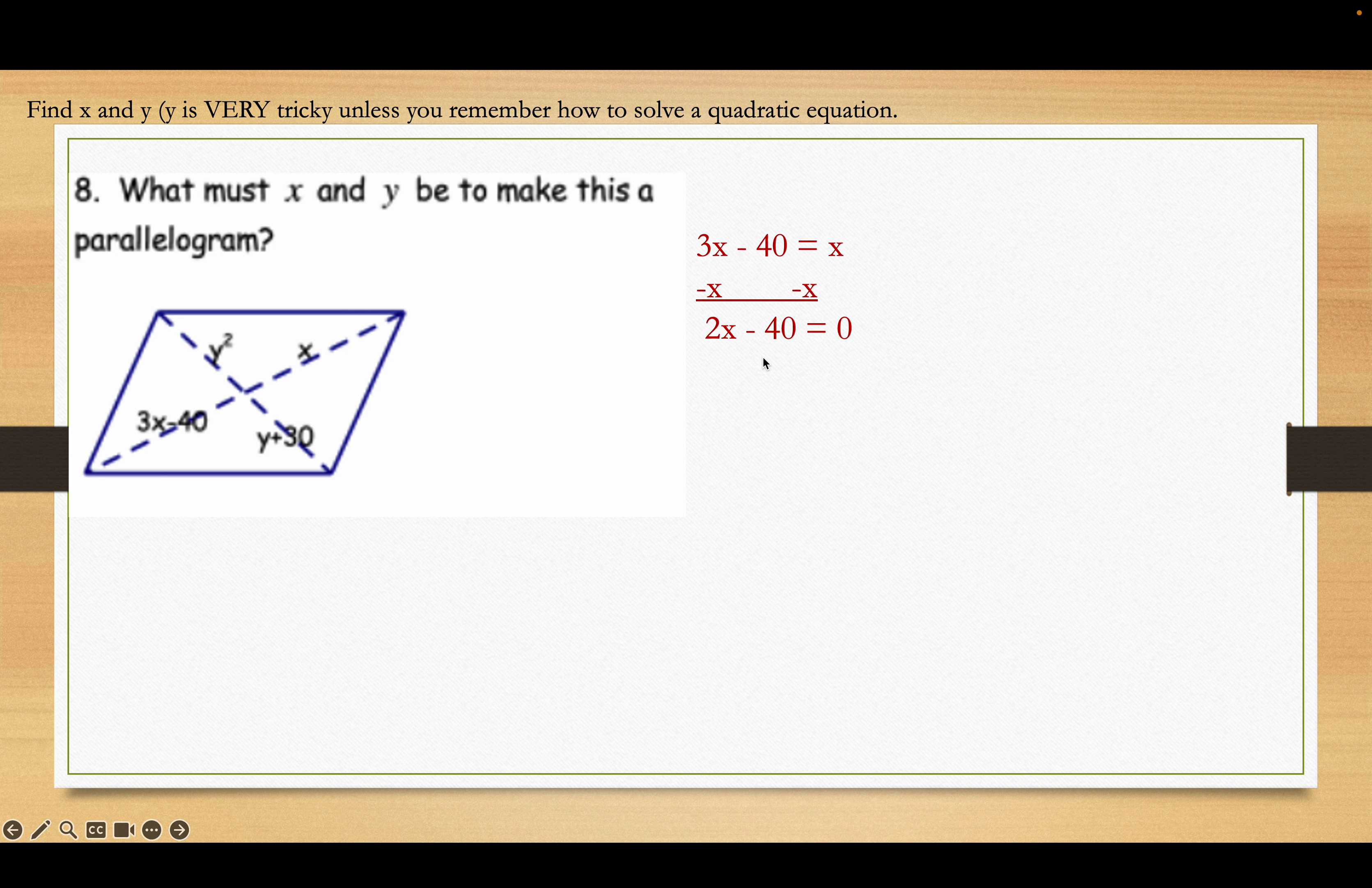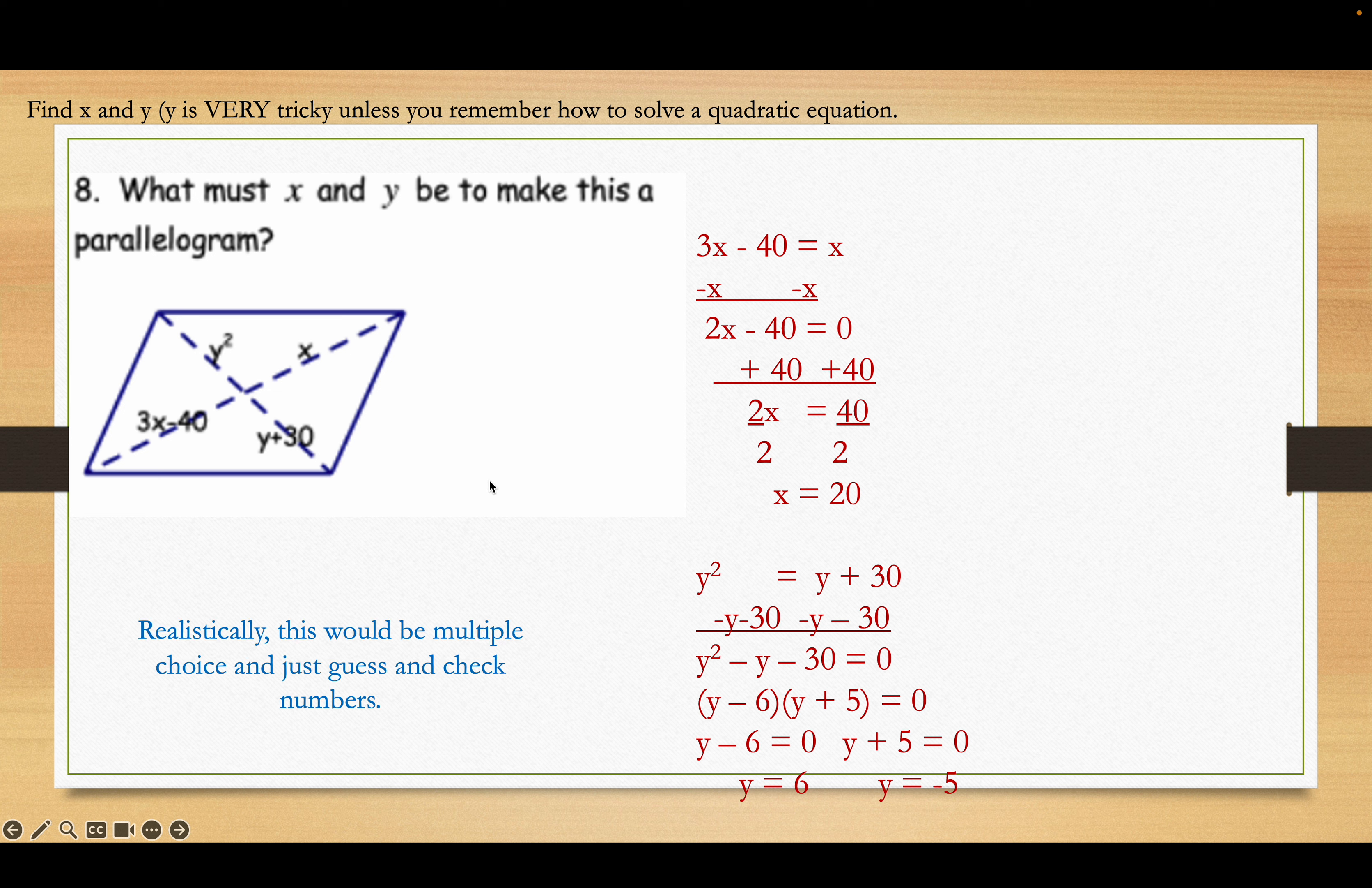X must be 20 for it to be a parallelogram. Now, on the other side, Y squared has to equal Y plus 30. Get it all on one side, because it's a quadratic. Factor it. Now, you know that the Y plus 5 factor is going to have a negative answer, so I don't need to worry about that. Y minus 6 is 0. Y is equal to 6. You can reject the negative 5 answer. And, that makes sense, because 6 squared is 36, and 6 plus 30 is 36. If they gave you this problem on a test, it's often a multiple choice question, and you can guess and check. A little test savvy.